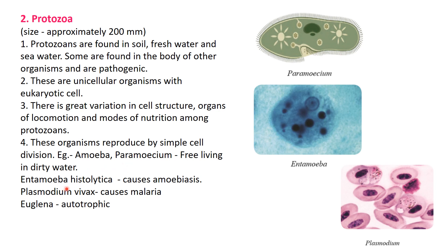Examples of protozoa: Amoeba and Paramecium, which are free living in dirty water. Entamoeba histolytica causes amoebiasis - it is found in dirty water, mostly during rainy season. If you get dirty water, this Entamoeba can enter our body and cause loose motions. Plasmodium vivax causes malaria - it is also a type of protozoa and it spreads through mosquitoes.